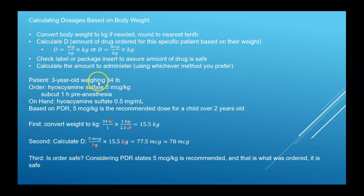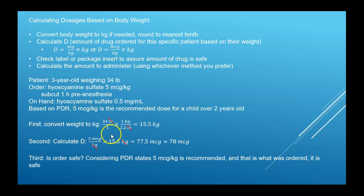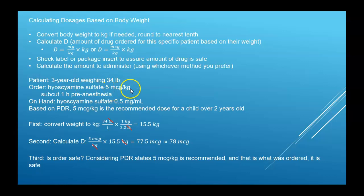Example: a three-year-old weighing 34 pounds. Order: hyoscyamine sulfate, 5 micrograms per kilogram, subcutaneous, one hour pre-anesthesia. On hand: hyoscyamine sulfate 0.5 milligrams per milliliter. Based on the physician's desk reference, 5 micrograms per kilogram is a recommended dose for a child over two years old. Convert the weight — 34 pounds — using dimensional analysis or proportion: 15.5 kilograms. Now calculate D: the order is 5 micrograms per kilogram multiplied by 15.5 kilograms, which gives 77.5 micrograms.